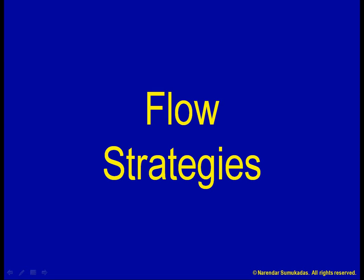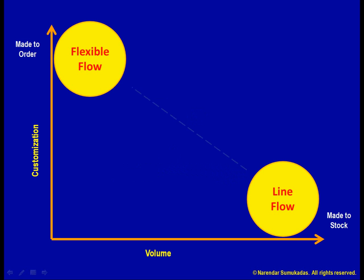As we saw earlier, an assemble-to-order process is a special case. More generally, we are limited to processes along the diagonal of this diagram. But what position should we pick along the diagonal?